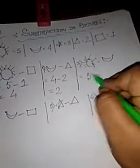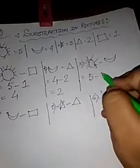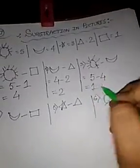Sun, that is 5, minus moon, that is 4, equals to 1.